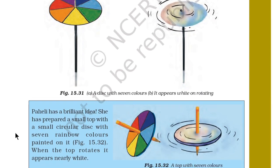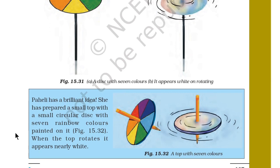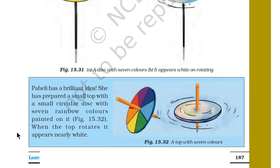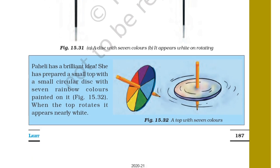Paheli had a brilliant idea — she prepared a small top with a circular disc with 7 rainbow colors painted on it. When the top rotates, it appears nearly white.